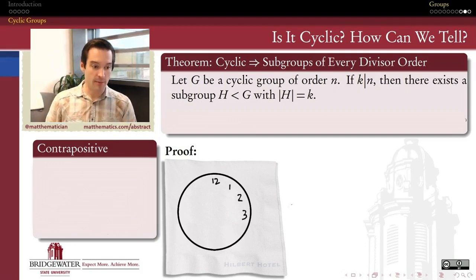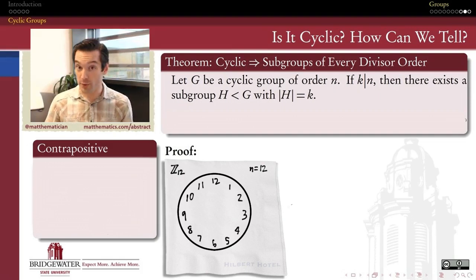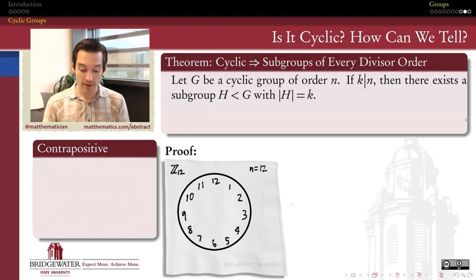Over here on my cocktail napkin from the Hilbert Hotel, I'm just going to draw out a clock, and maybe let's make it a real clock. So, I actually have 12 points around my clock. This clock is a model for the additive group of integers mod 12. Let's see if I can come up with a rationale for why this statement here in the theorem should be true.